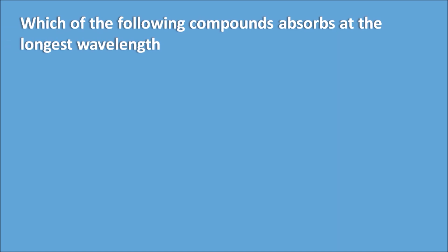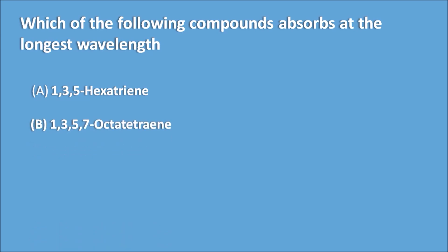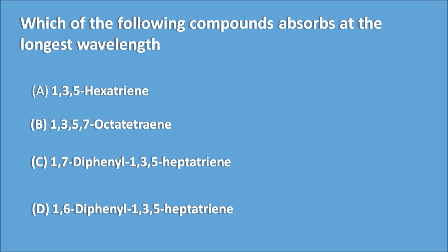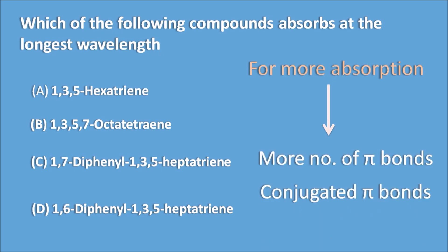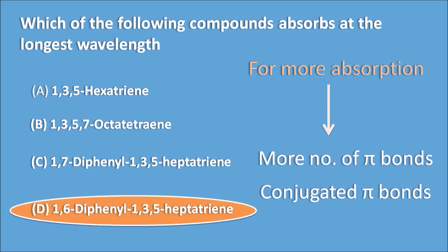First question: Which of the following compounds absorb at the longest wavelength? For more absorption at the longest wavelength, the compound should have more number of pi bonds and more conjugated pi bonds. If you find these two criteria, you can easily observe that option D is the compound having the longest wavelength, which is having the more absorption.